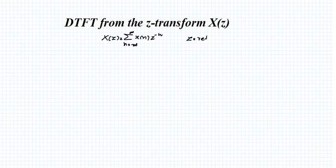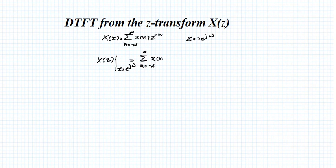In the Z-transform, z is defined as r times e raised to j omega. If you substitute z equal to e raised to j omega, the equation becomes sigma n equals minus infinity to infinity, x(n) into e raised to j omega, the whole raised to minus n, which gives e raised to minus j omega n. This equals X(e raised to j omega) when z equals e raised to j omega. So if you simply substitute z equal to e raised to j omega, you will get the DTFT.